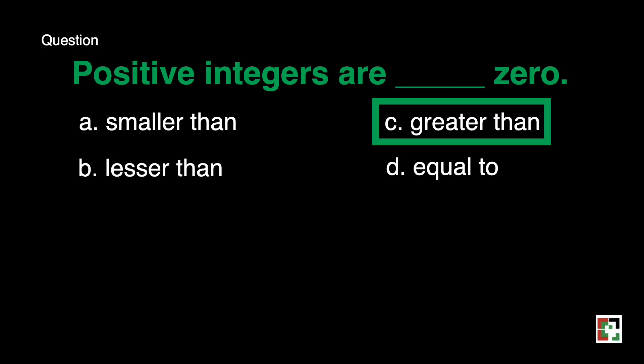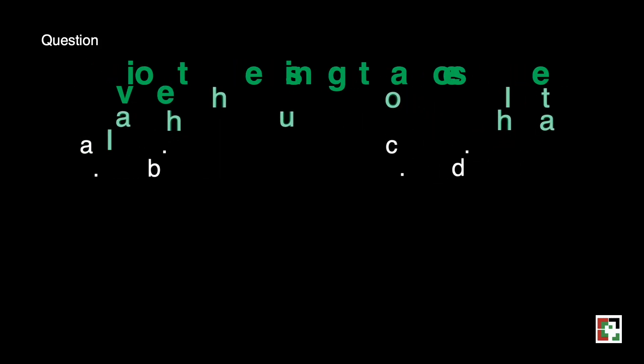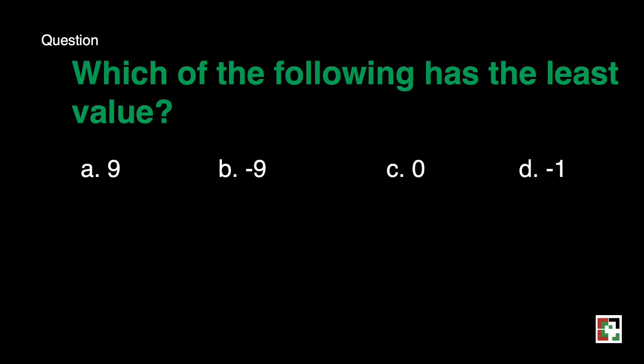Next question. Which of the following has the least value? A, 9. B, negative 9. C, 0, and D, negative 1. Our answer is negative 9. Why? Because if you're going to compare it to the negative 1, 9 has the lower value.